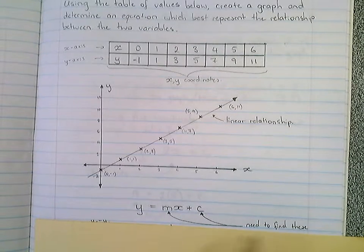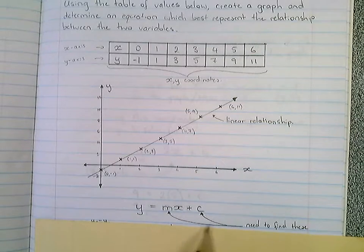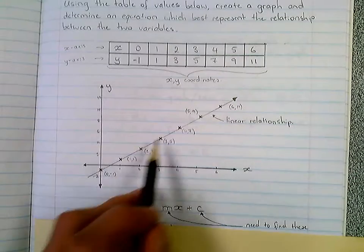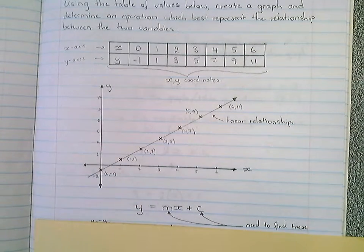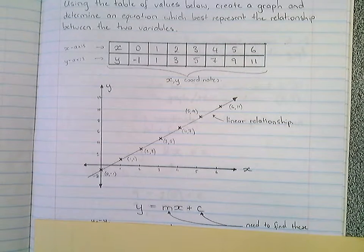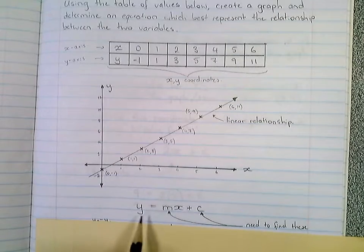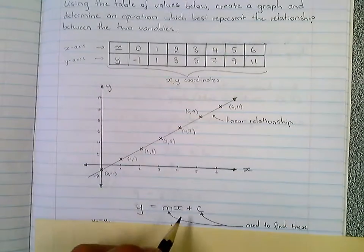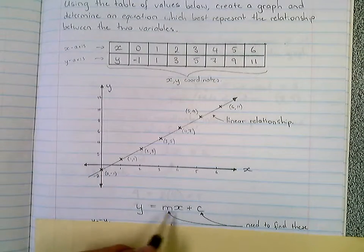So we need to find these two values in order to create an expression which explains or describes this relationship. Now to do that, the only two things we need to find is m and c, the reason being is because y is our y coordinate, and x is our x coordinate. So these could be a multitude of different things.